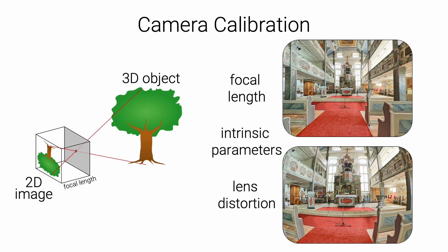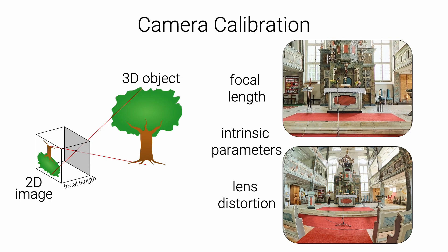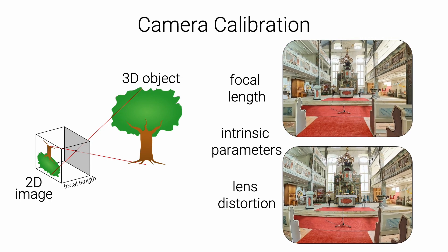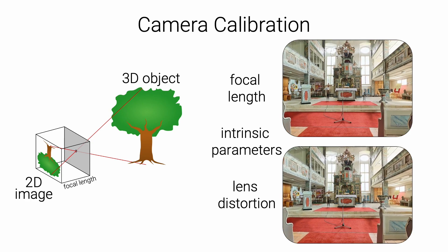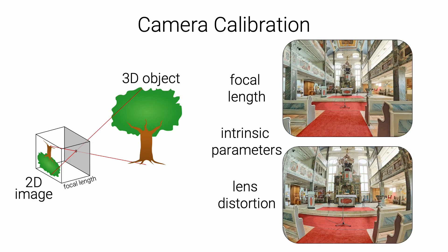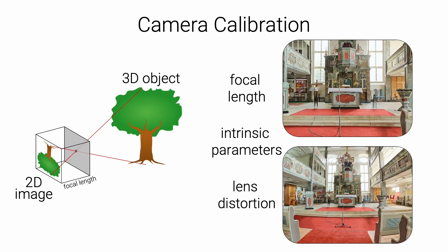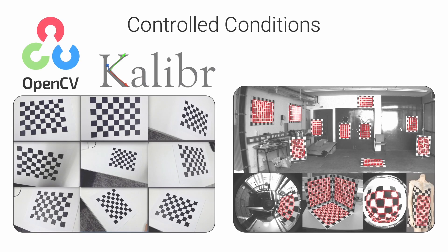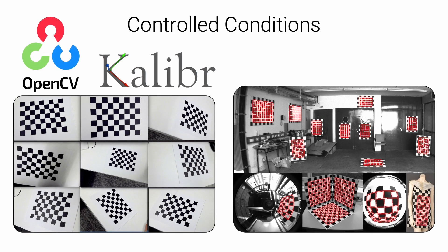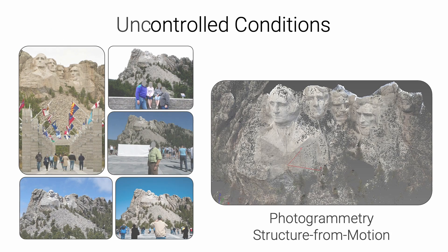Camera calibration is about estimating the mathematical model that describes how images are formed in a given camera. This is required for many image-based 3D applications. This model is parameterized by intrinsic parameters, which often include the focal length and lens distortion parameters. The problem of calibration has been extensively studied and many tools are now available. They generally require capturing many images from various viewpoints in controlled conditions with calibration targets like checkerboards.